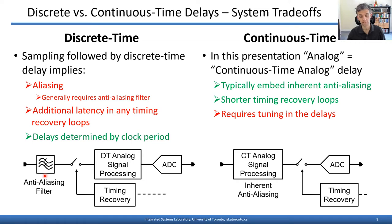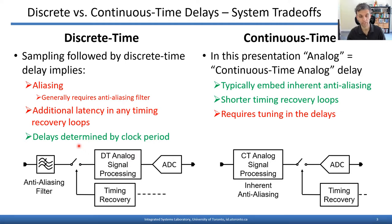Moreover, in many systems feedback is used to determine the precise timing of the sampling operation. Introducing discrete-time delay circuits after the sampling operation and as part of the feedback loop will introduce latency in that timing recovery loop, which can have negative consequences. On the bright side, discrete-time delays are determined by the clock period and can easily be changed over a wide range just by changing the clock frequency.